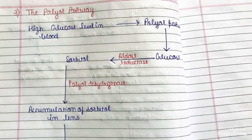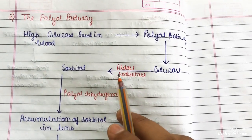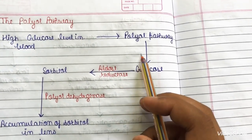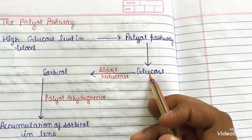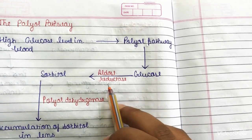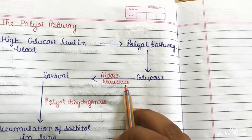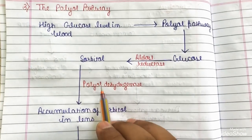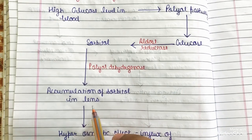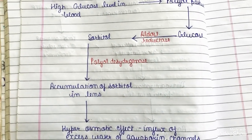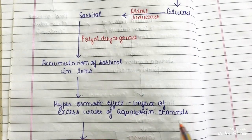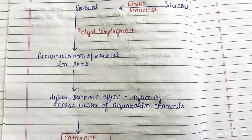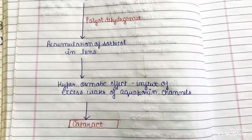The third pathway is the polyol pathway, which is activated by high glucose levels in blood. The polyol pathway processes glucose through aldose reductase, converting it into sorbitol. With the help of polyol dehydrogenase, sorbitol accumulates in the lens. This causes a hyperosmotic effect with an influx of excess water through aquaporin channels into the lens, leading to opaqueness of the lens and finally resulting in cataract.